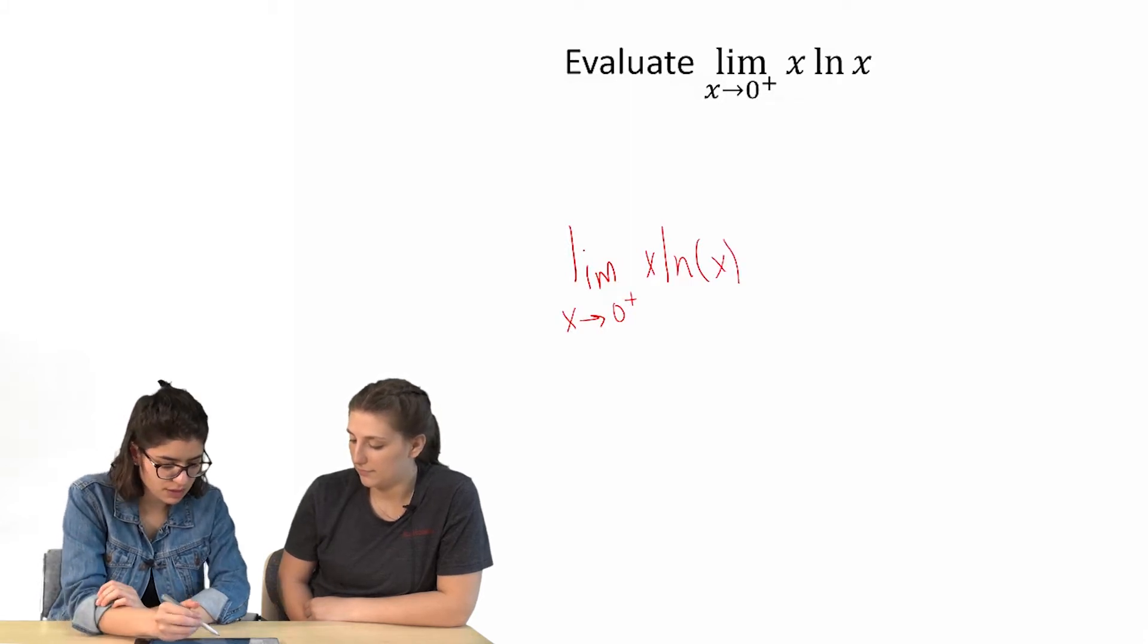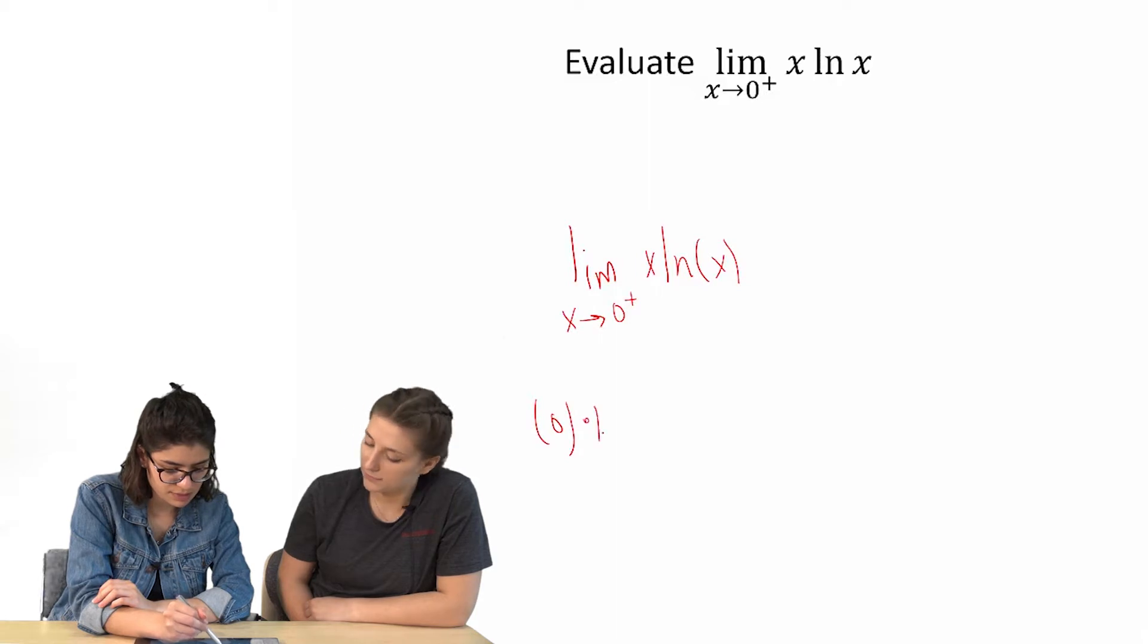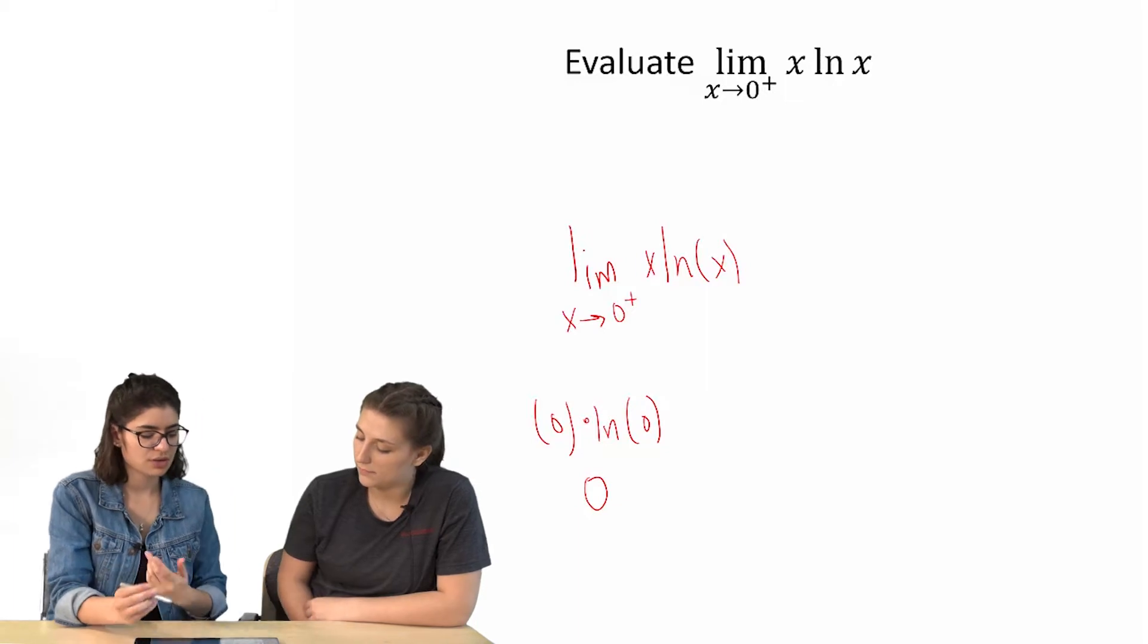So let's say we just plug in zero. We would get zero times natural log of zero, and we know zero times anything is just zero.